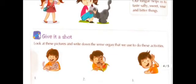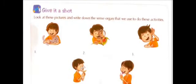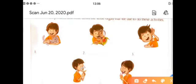That is 'Give it a Shot.' Look at these pictures and write down the sense organ that we use to do this activity. Look at the first picture: a boy is holding a cat and feeling the softness of the cat. Here, the boy used skin to feel the softness of the cat, so you have to write 'skin' in the blank space. Similarly, you have to complete the rest of the portion by yourself.